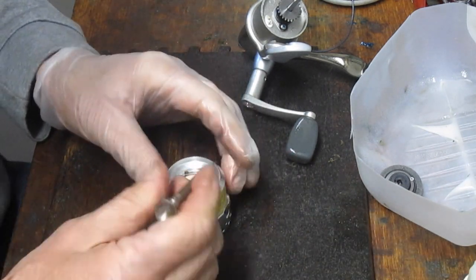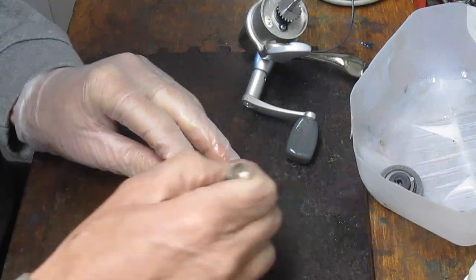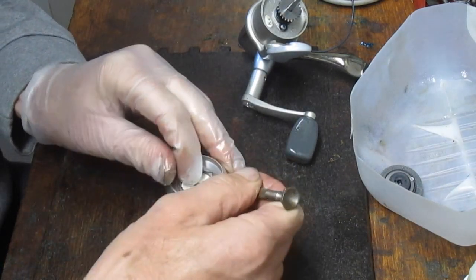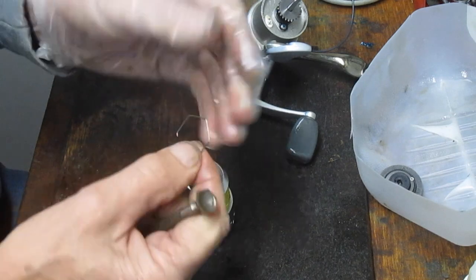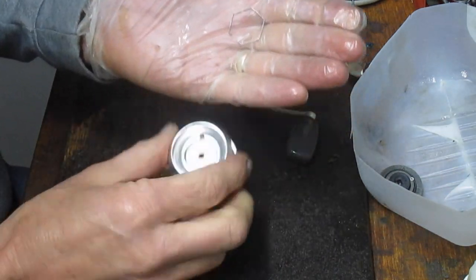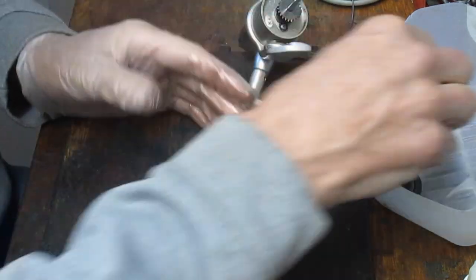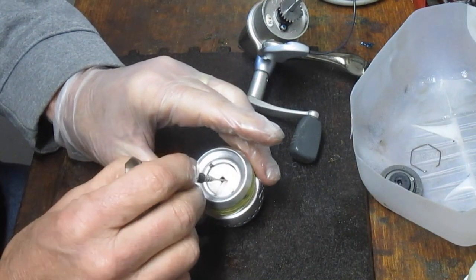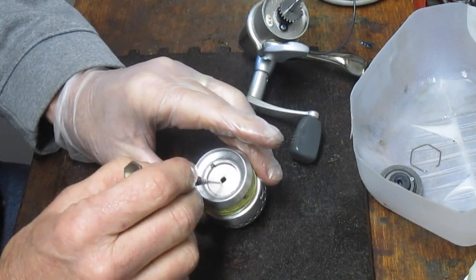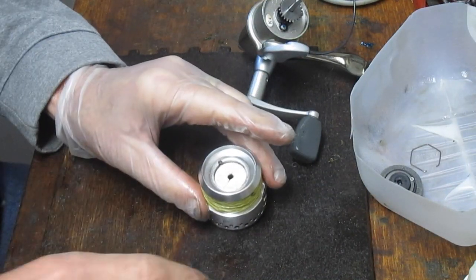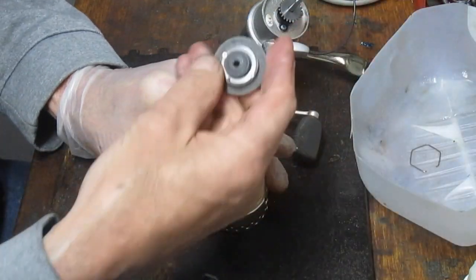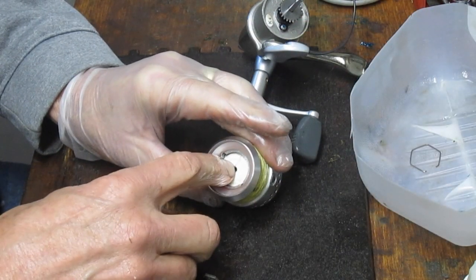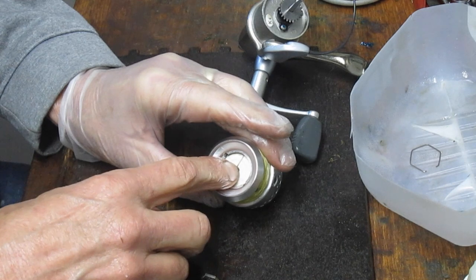But let's go up top and let's get this out. I'm going to just use a little thin screwdriver here. You can work it behind the clip that holds the drag washers in.